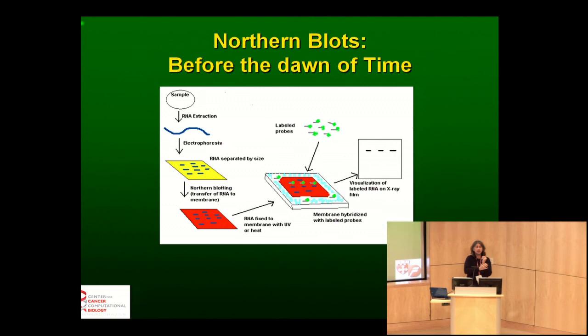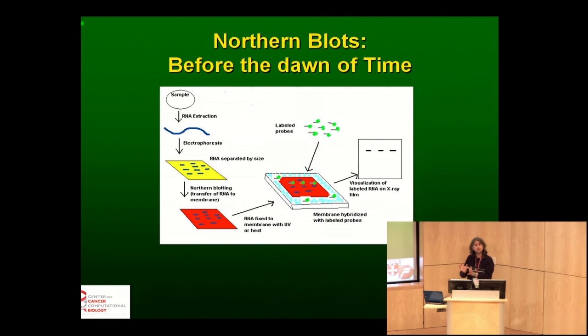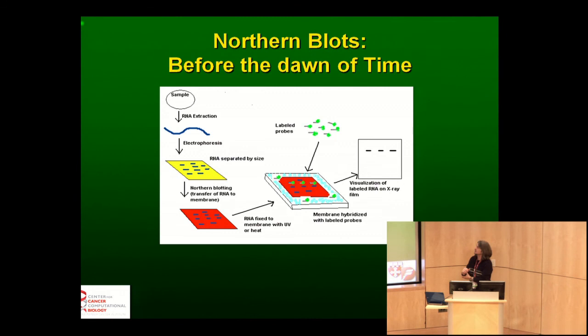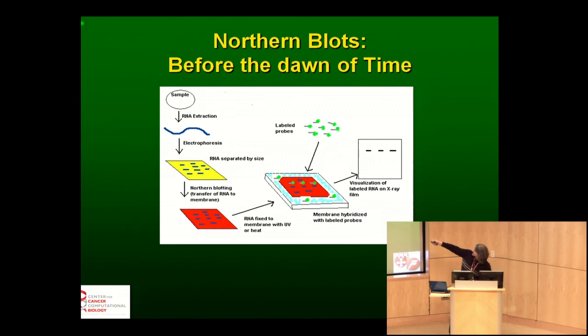Assaying proteins has turned out to be fairly difficult, but assaying RNAs or the levels of RNA is a really good surrogate for looking at the proteins, in part because it's easier to measure. There have been tools and techniques for measuring RNA expression levels. Basically what you do is take RNA from a cell.